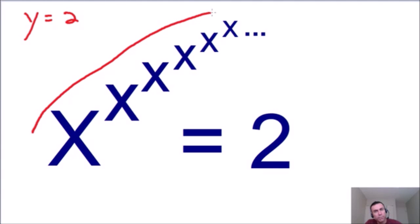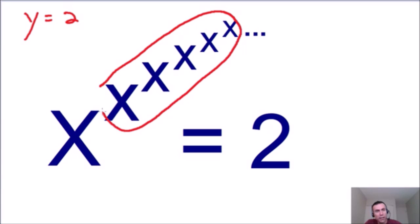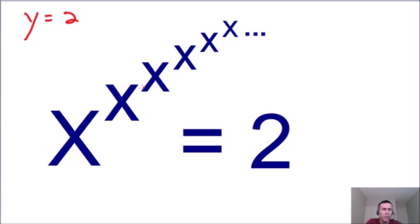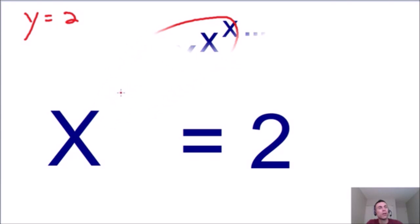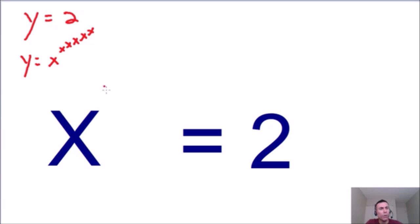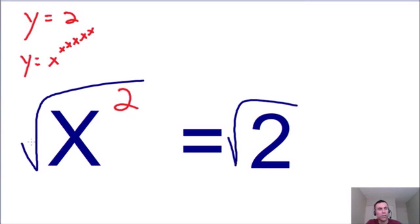We have x raised to a bunch of x exponents. If one copy of the infinite tower equals y, then the nested copy must also equal y. And since y equals 2, the circled exponent portion is also equal to 2. So I replace it: y equals x to the power of y, which becomes x squared equals 2. Taking the square root of both sides, the square root of x squared is just x, so x equals the square root of 2.